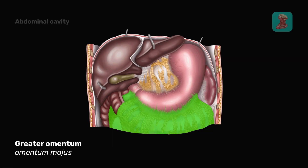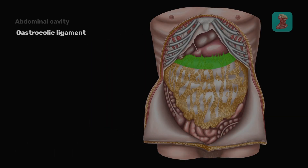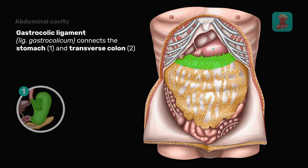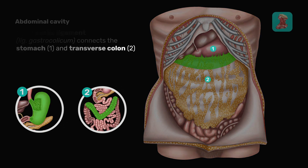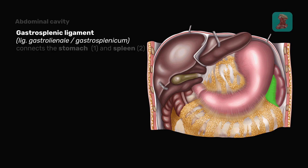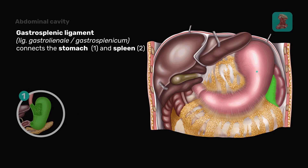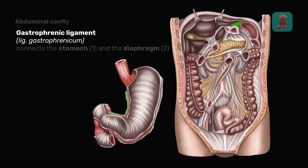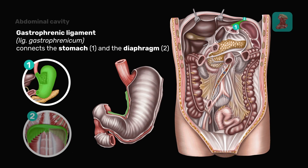The greater omentum is the elongated dorsal mesentery of the stomach. It consists of three ligaments: the gastrocolic ligament, which connects the stomach and the transverse colon; the gastrosplenic ligament, which connects the stomach and spleen; and the gastrophrenic ligament, which connects the stomach and the diaphragm.